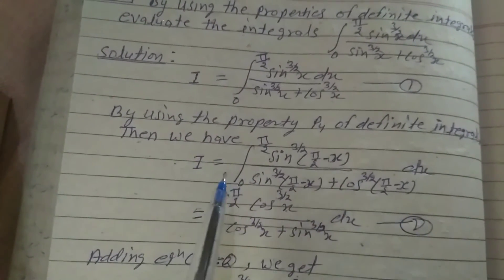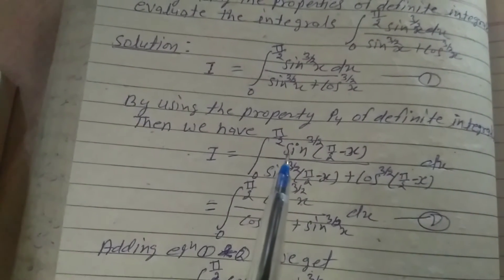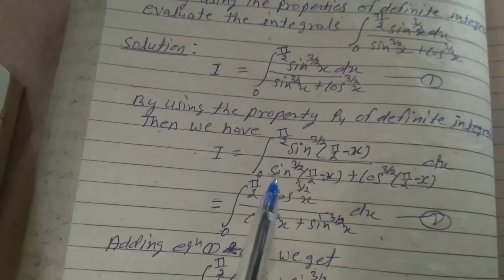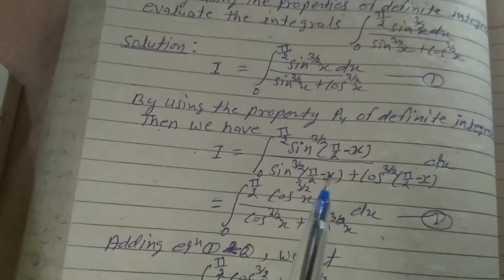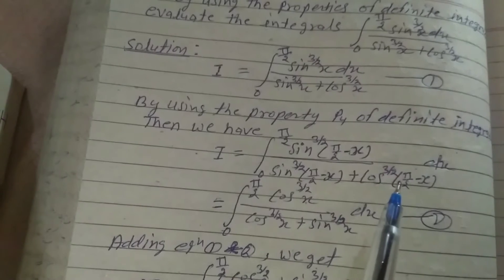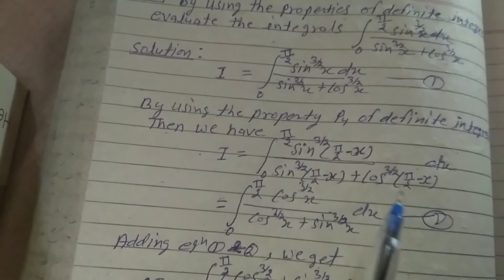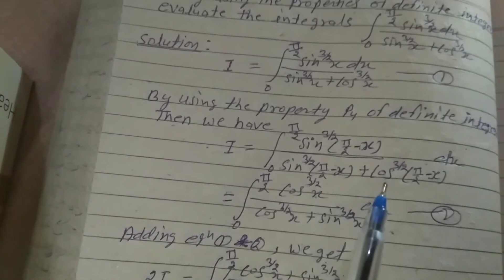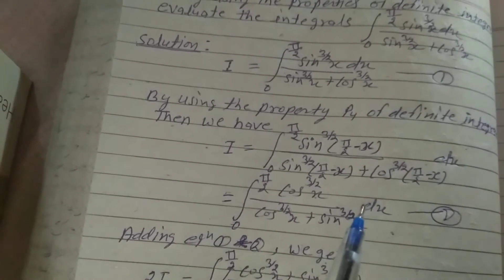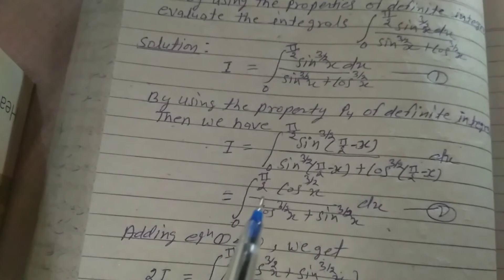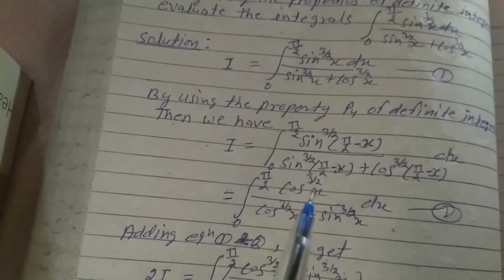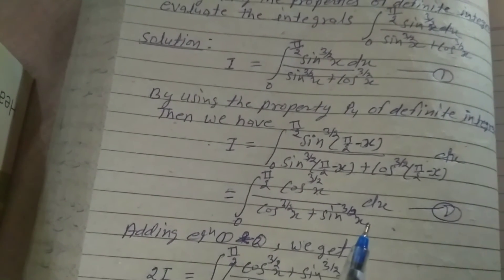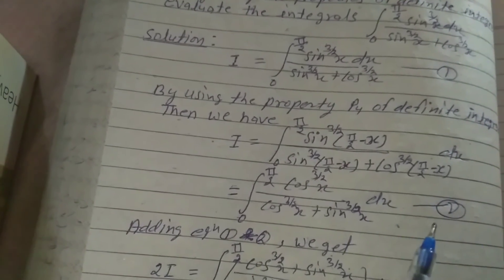We have I equal to the integral from 0 to π/2 of sin^(3/2)(π/2 - x) divided by sin^(3/2)(π/2 - x) plus cos^(3/2)(π/2 - x) dx. Using sin(π/2 - x) = cos(x) and cos(π/2 - x) = sin(x), this gives I equal to the integral of cos^(3/2)(x) divided by cos^(3/2)(x) plus sin^(3/2)(x) dx — equation 2.